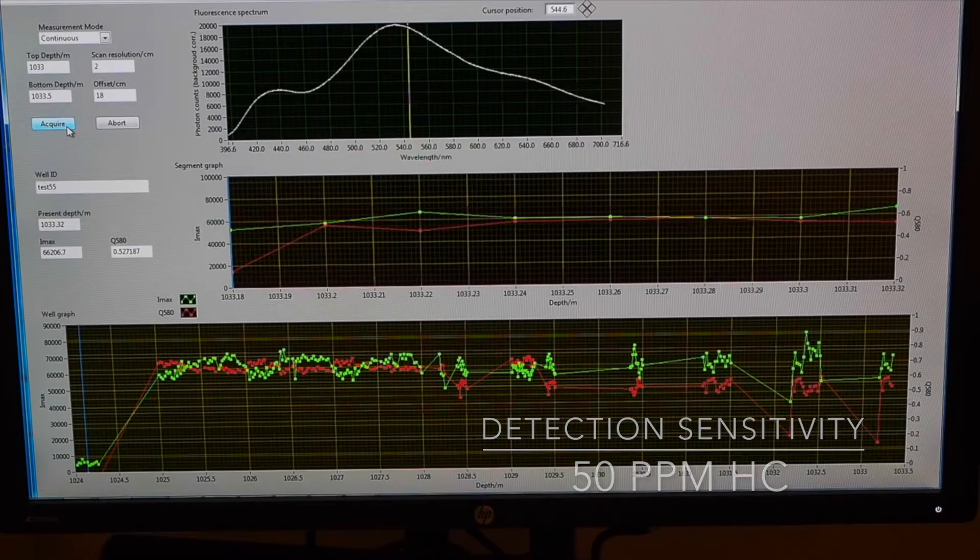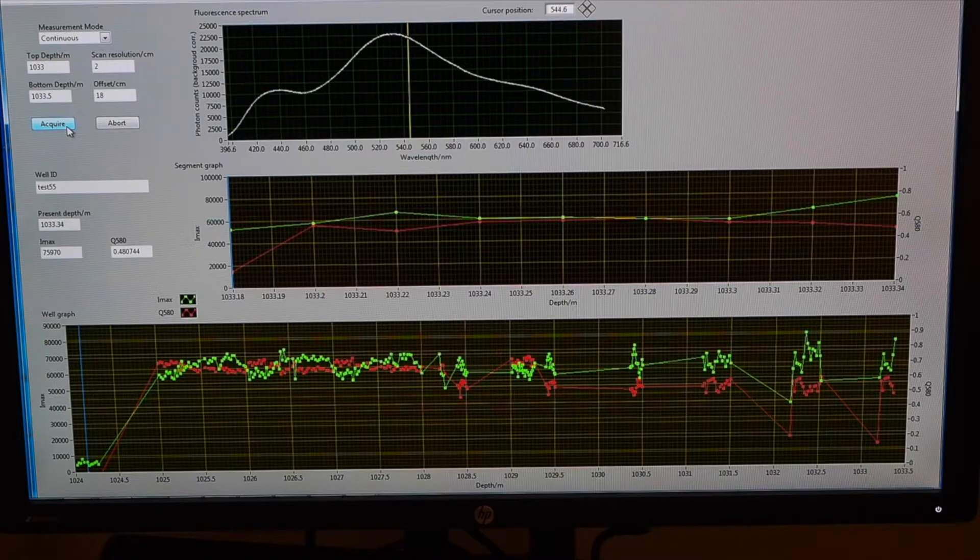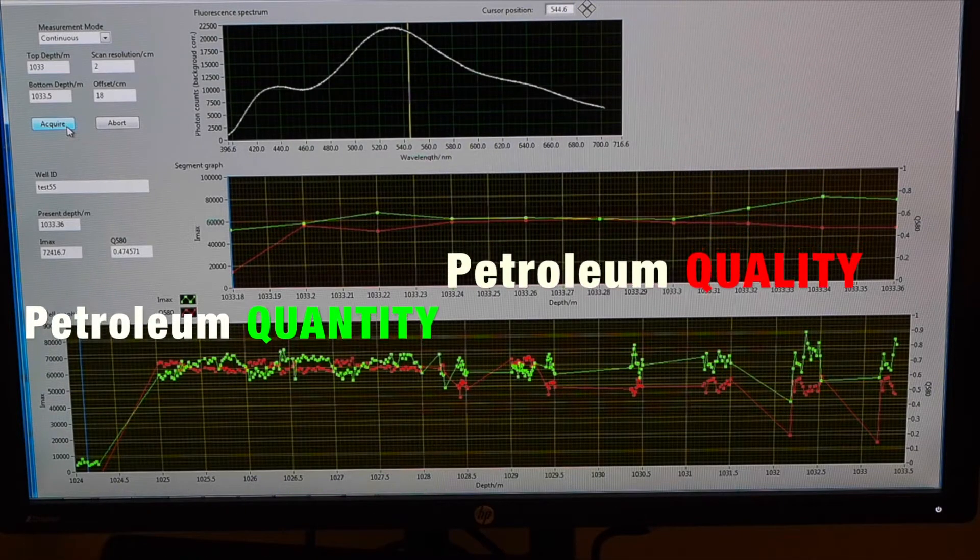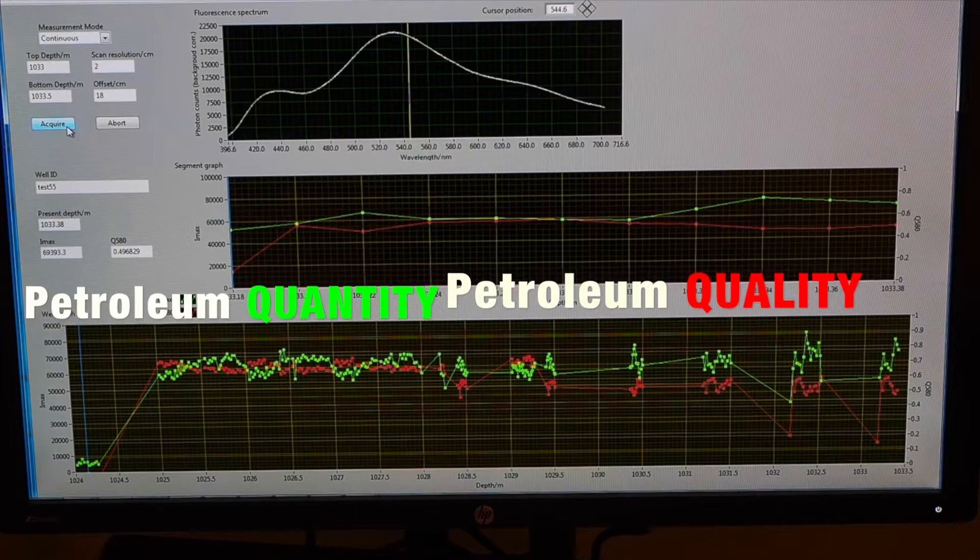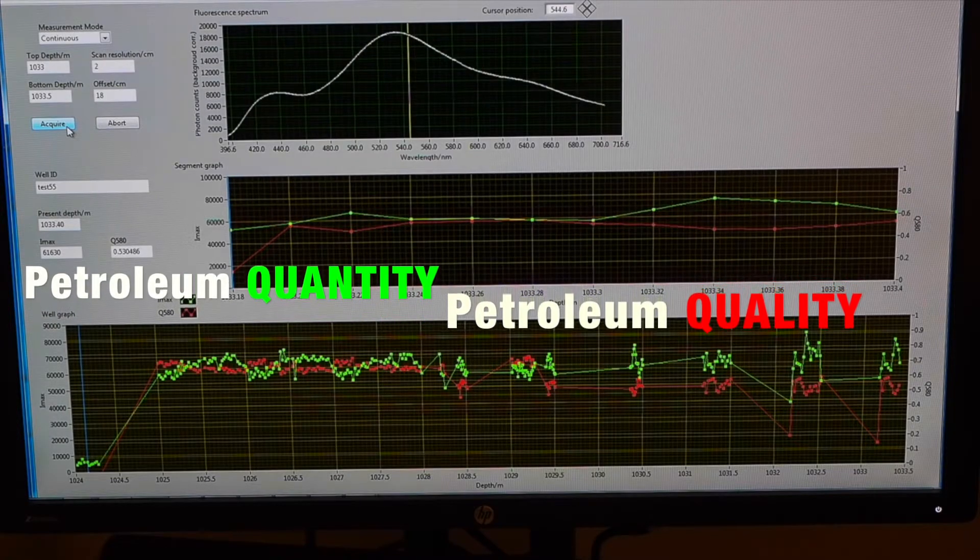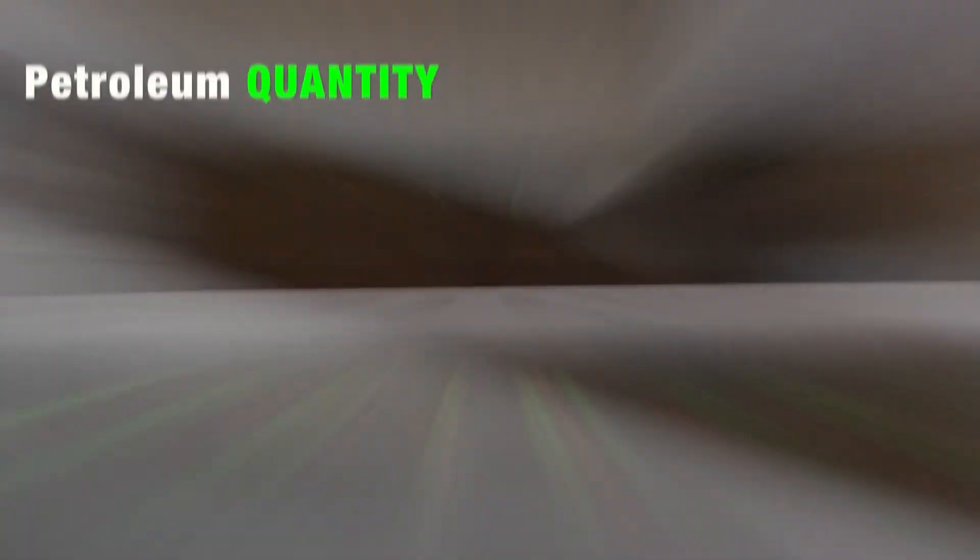These parameters are readily visualized by two complementary depth logs: one for petroleum quantity and one for petroleum quality, ranging from condensates to tar-rich oils.